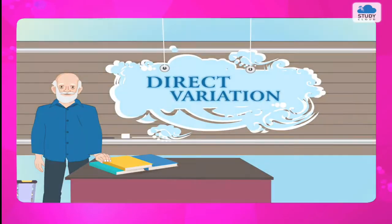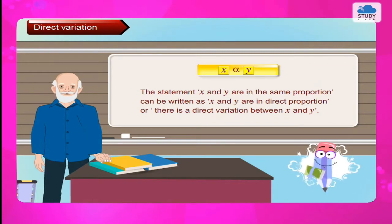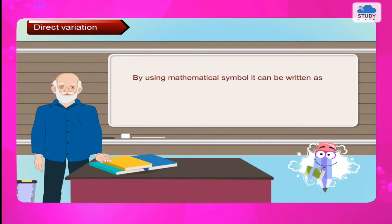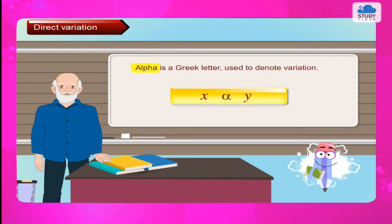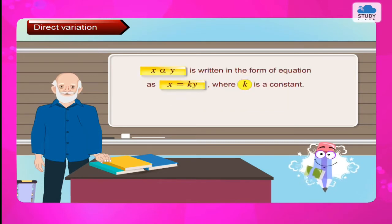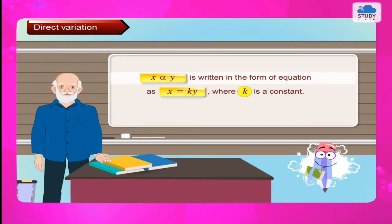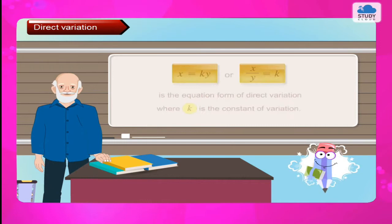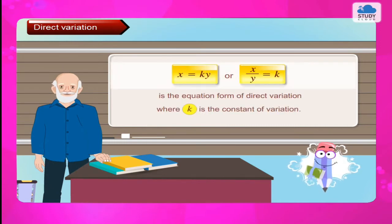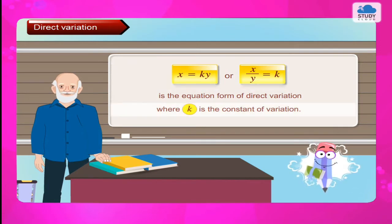Direct Variation. The statement 'x and y are in the same proportion' can be written as 'x and y are in direct proportion' or 'there is a direct variation between x and y.' Using mathematical symbols, x is directly proportional to y. Alpha is a Greek letter used to denote variation. This is written as x = k × y, where k is the constant of variation, or equivalently x upon y = k.